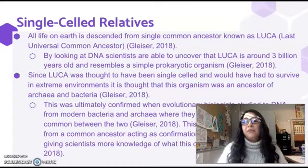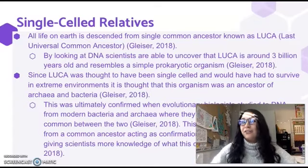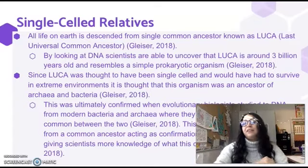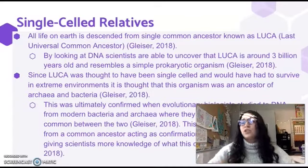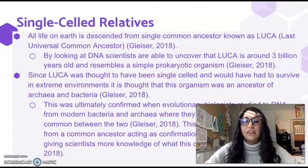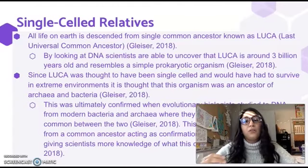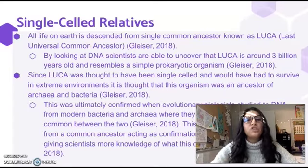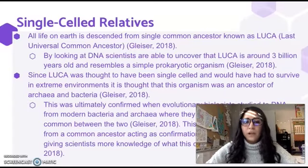When I say 'we,' I mean us, the cat on the street, your dog, fish, trees outside — we all descended from a common ancestor. This is commonly referred to as LUCA, the Last Universal Common Ancestor. By looking at DNA, they were able to discover that LUCA is about 3 billion years old, and it mostly resembled a prokaryotic organism.